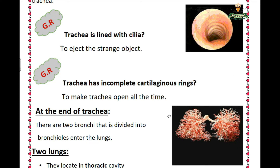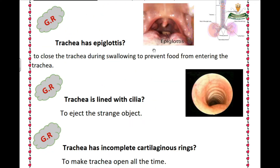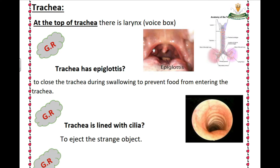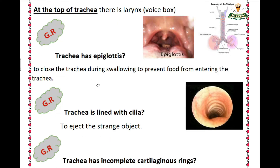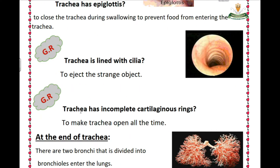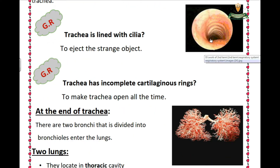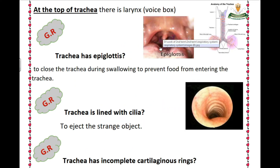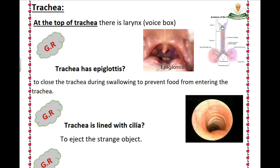To summarize: the trachea has a larynx, the voice box. Number two, the trachea has an epiglottis to close the trachea during swallowing. Number three, the trachea has cilia to eject foreign objects. The trachea has incomplete cartilaginous rings to keep the trachea open all the time. This is the incomplete cartilaginous rings, this is the epiglottis, and this is the voice box — the larynx.